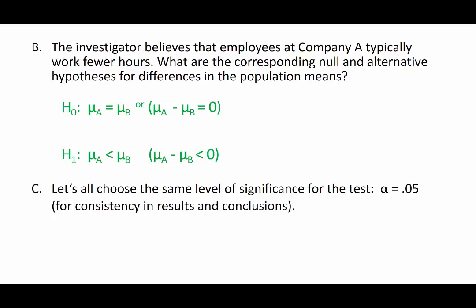Now part C, nothing to do here. We're going to choose the same level of significance for the test and we're just going to make it 0.05. So alpha is 0.05.